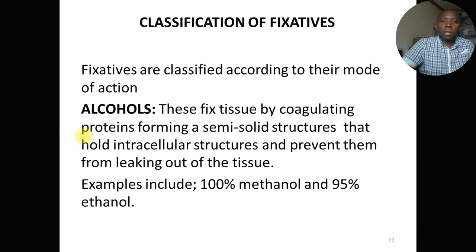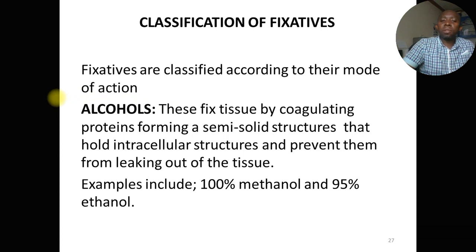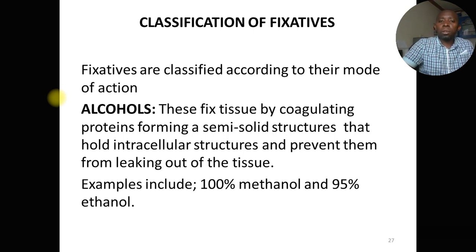Now let's look at the classification of fixatives based on their mode of action. First, alcohols: these fix tissue by coagulating proteins, forming a semi-solid structure that holds structures and prevents them from leaking out. Once fixed this way, these structures cannot easily be dissolved through subsequent tissue processing. Examples include 100% methanol and 95% ethanol.